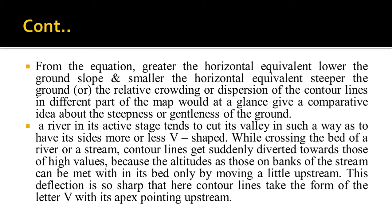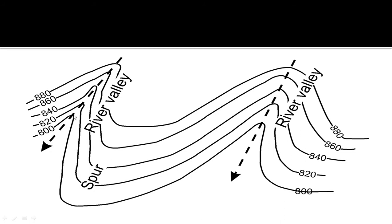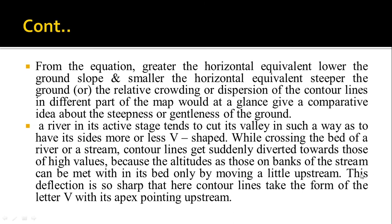A river in its active stage tends to cut the valley in a V-shape — whenever a river is running it erodes and forms a V-shaped valley. While crossing the bed of a river or stream, the contour line will get suddenly diverted towards higher values. So if a river runs here, the 800-meter contour will all of a sudden point towards 820 meters. This deflection is so sharp that the contour line takes the form of the letter V, with the apex pointing upstream, always towards the higher values.